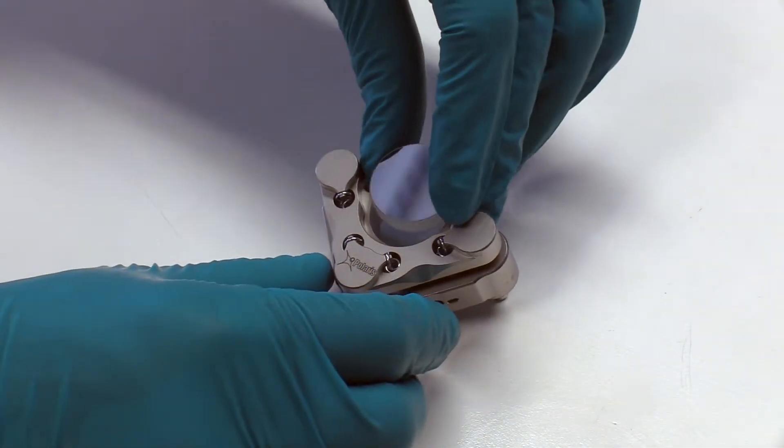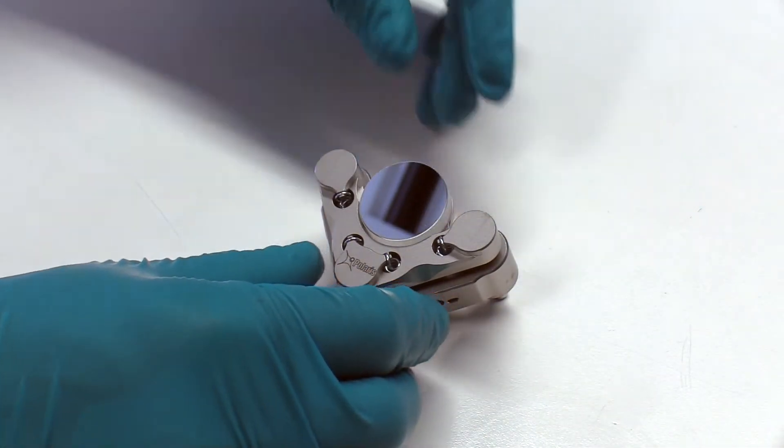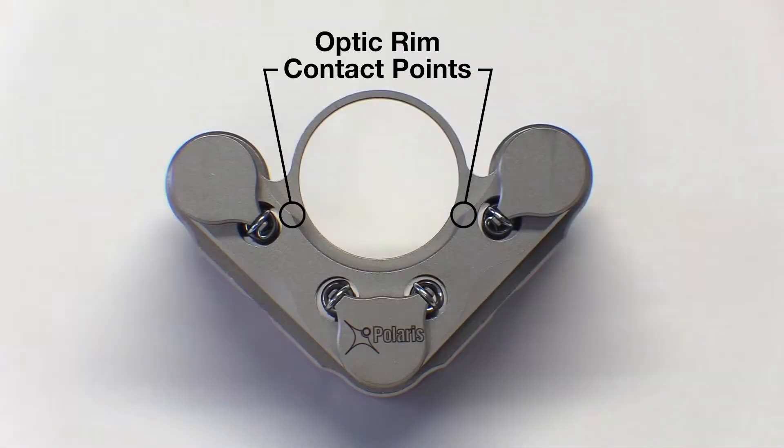Next, place the optic on the glue plane so that the edge is touching both of the optic rim contact points on the mount.